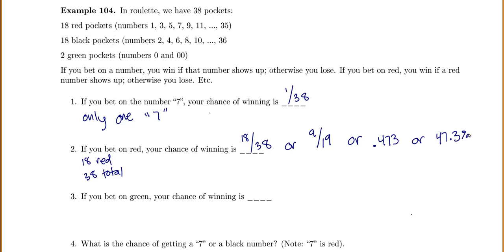If you bet on green, your chance of winning is two out of 38 since there are only two green pockets. As a decimal that's 0.0526, or as a percentage 5.26%.